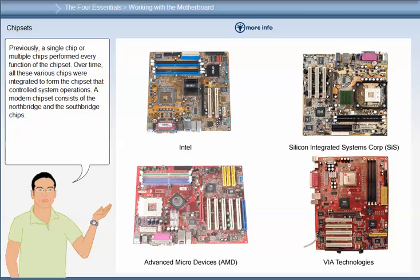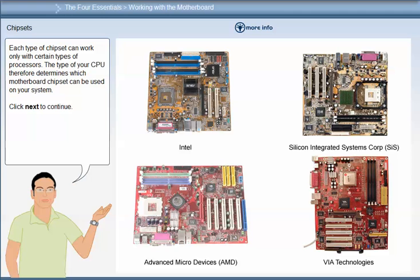Previously, a single chip or multiple chips performed every function of the chipset. Over time, all these chips were integrated to form the chipset that controlled system operations. A modern chipset consists of the Northbridge and the Southbridge chips. Each type of chipset can work only with certain types of processors, so the type of CPU determines which motherboard chipset can be used on your system.